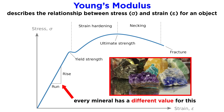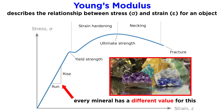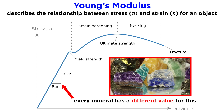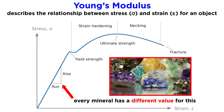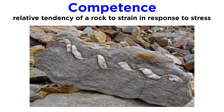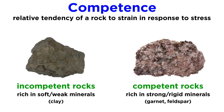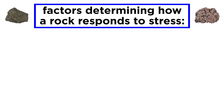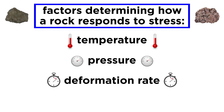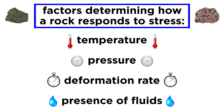Since minerals are the building blocks of rocks, and each mineral has a specific value for Young's modulus, the mineralogy of a given rock will exert a strong control on how that rock will deform. The relative tendency of a rock to strain in response to stress is called its competence, which can also be defined as the relative viscosity of a rock. Incompetent rocks are composed of soft, weak minerals like clay, while competent rocks are composed of strong, rigid minerals like garnet or feldspar. Other than competence, the manner in which a rock responds to stress is controlled by the conditions it is under — mainly temperature and pressure — but other factors like deformation rate and presence of fluids are also important.